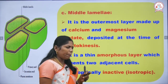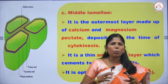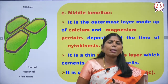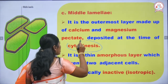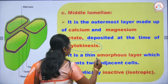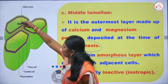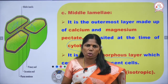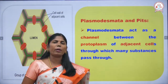The middle lamella is the outermost layer, made up of calcium and magnesium pectate. It is formed during cytokinesis — 'cyto' means cytoplasm, 'kinesis' means division. It is deposited at the time of cell division. This is an amorphous layer, like cement, used to connect adjacent cells. The middle lamella connects all cells and is optically inactive — no cell division occurs here.